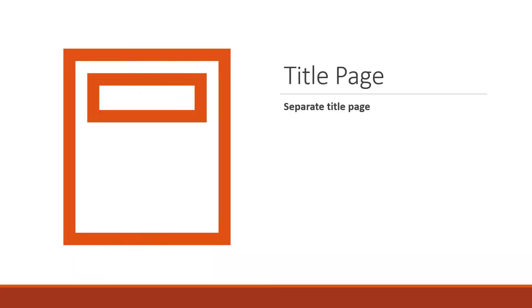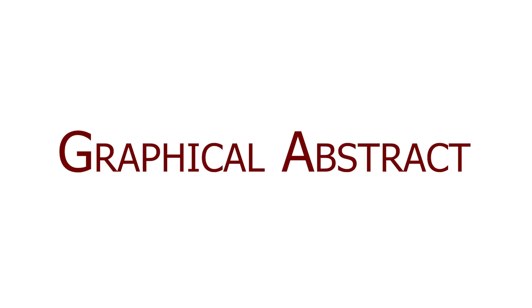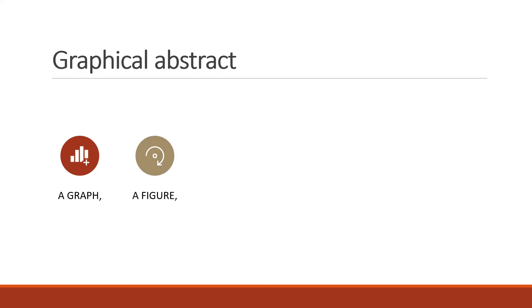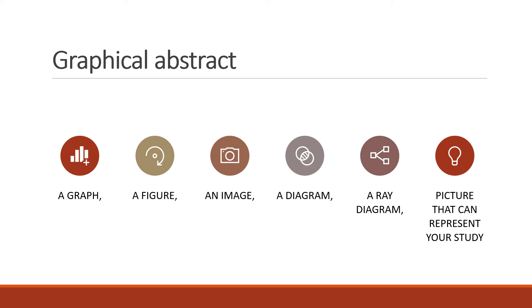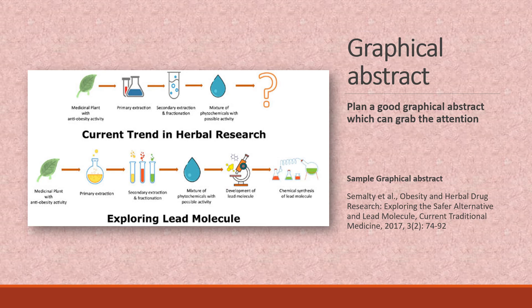Next, a separate title page—many journals require a separate title page to be uploaded. Third is the graphical abstract. Apart from the text abstract, they require a graphical abstract: a figure, image, flow diagram, ray diagram, or pictorial diagram which can represent your study. Plan a good graphical abstract which can catch the attention of the reader. Next thing is image files.